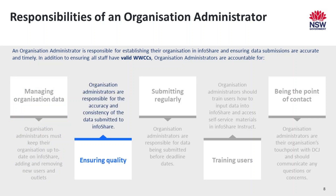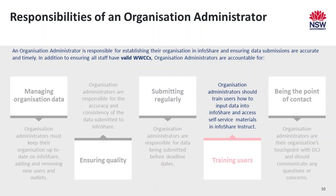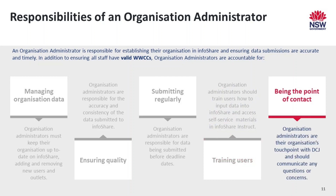Ensuring quality: organization administrators are responsible for the accuracy and consistency of the data their organization submits to InfoShare. Submitting regularly: organization administrators are responsible for ensuring that all data is submitted ahead of any deadlines communicated by DCJ. Training users: organization administrators should ensure users are trained in how to input and upload data into InfoShare and where to access any self-service materials. Being the point of contact: organization administrators are their organization's touchpoint with DCJ regarding any matters relating to InfoShare.